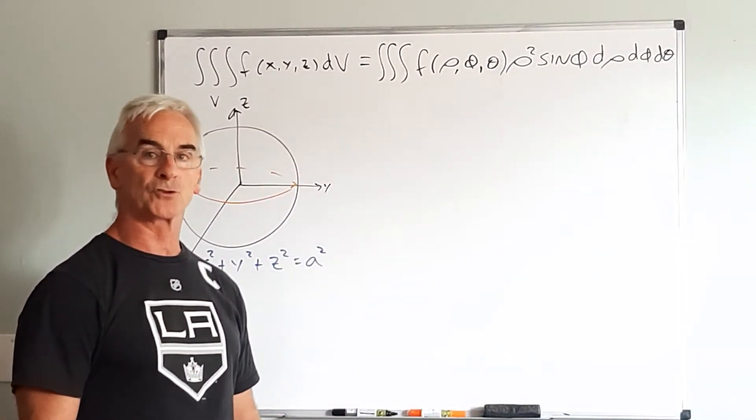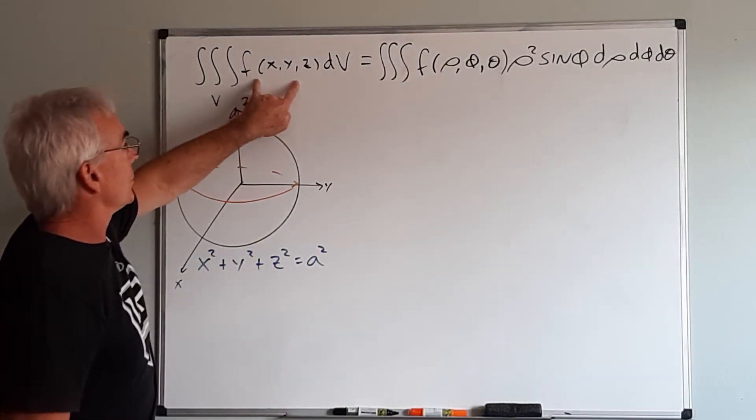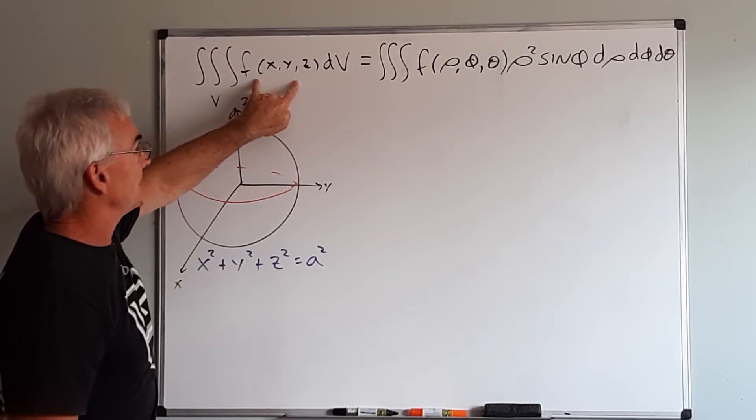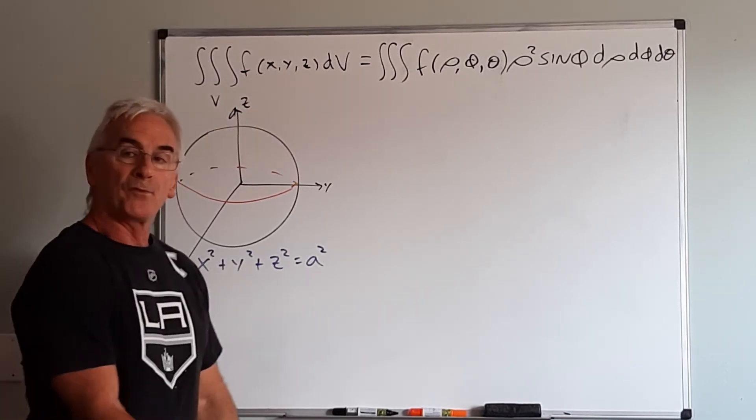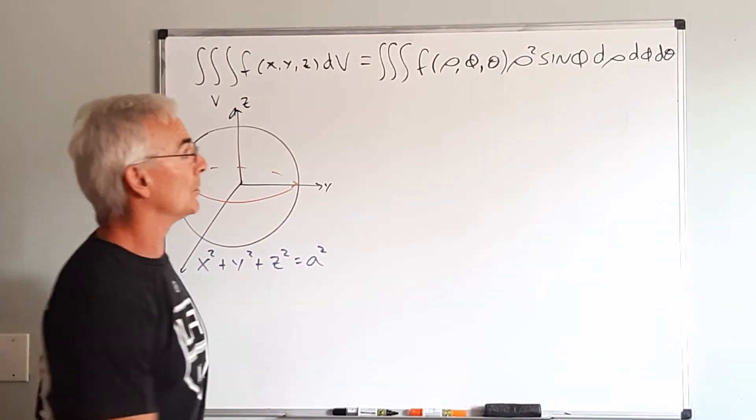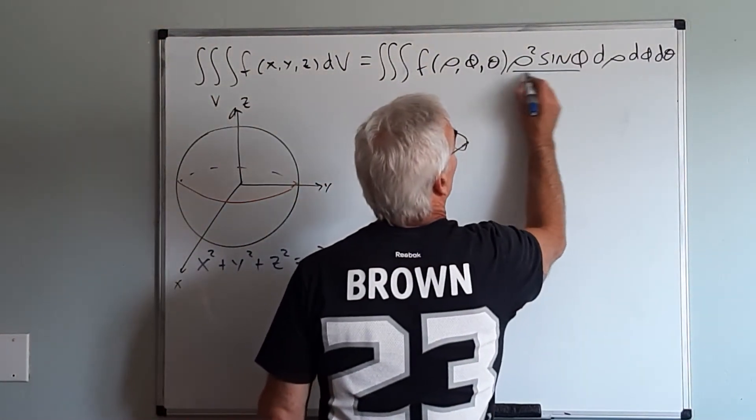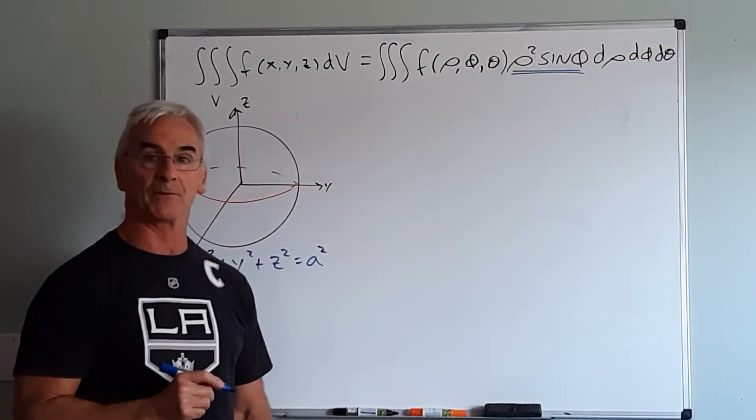Now when evaluating a triple integral in spherical coordinates, this was my original integral in the xyz space, and I'm going to switch it to the spherical space. But like before when we introduced the R in both polar and cylindrical, we have the term rho squared sine phi.